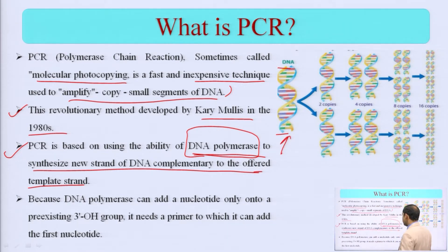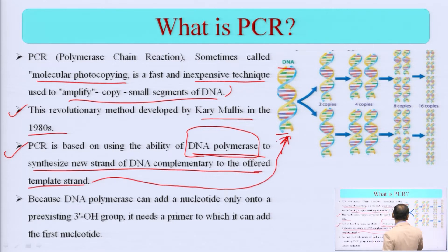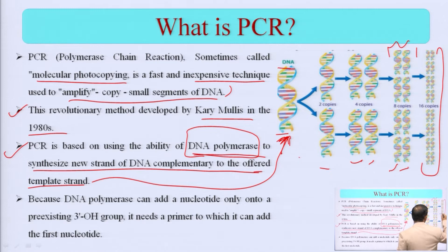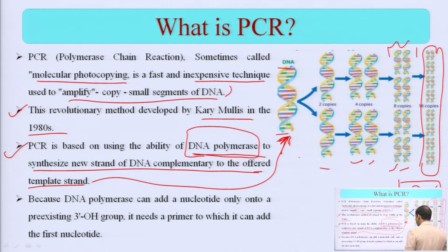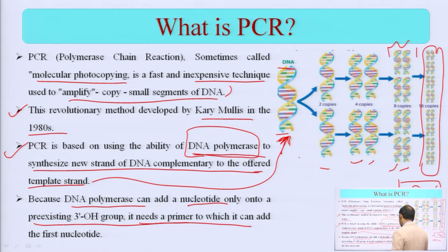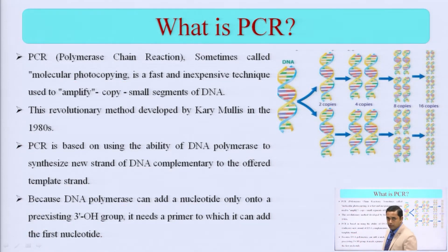You are giving one DNA — that is one template strand. From that template, multiple copies will be created. You can create millions of copies of that DNA. DNA polymerase can add a nucleotide only to a pre-existing 3-prime OH group, and it needs a primer to which it can add the first nucleotide. If you have one copy, you can create multiple copies of your DNA.